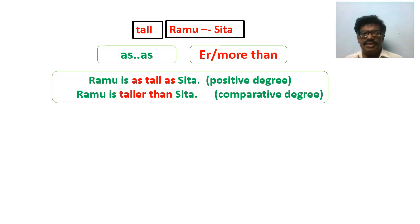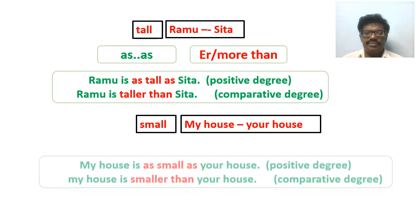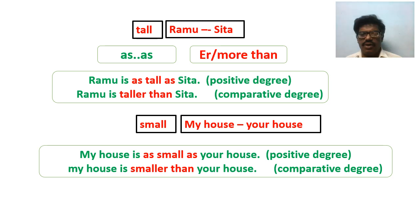Look at the sentences: 'Ramu is as tall as Seta' — this is the positive degree. 'Ramu is taller than Seta' — this is the comparative degree. Whenever we make use of 'as...as', it is positive degree; whenever we make use of 'than', it is comparative degree. One more example: the adjective 'small' is taken to compare two units — my house and your house. 'My house is as small as your house' — positive degree. 'My house is smaller than your house' — comparative degree.